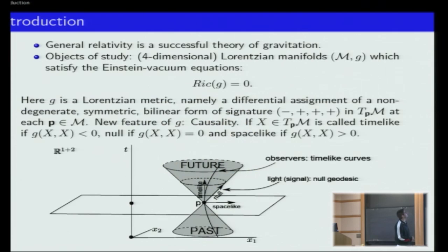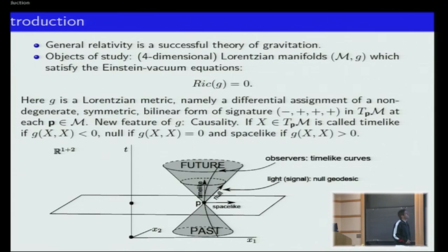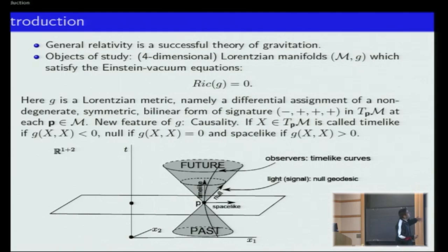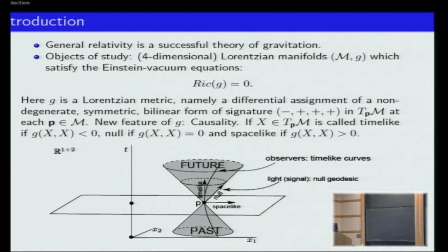General relativity is considered the classical theory that describes gravity and the evolution of systems under the effect of gravity. The physical theory considers four-dimensional Lorentzian manifolds, and in particular we impose on the metric the equation that the Ricci curvature is equal to zero.